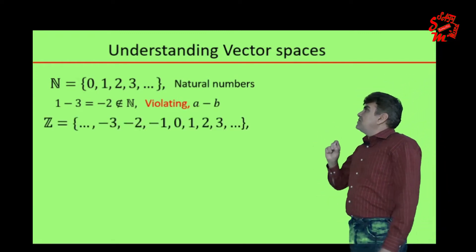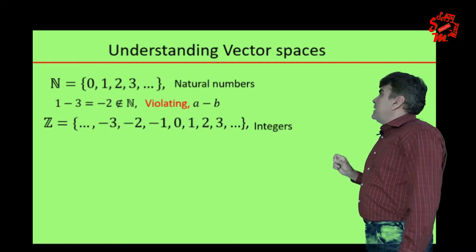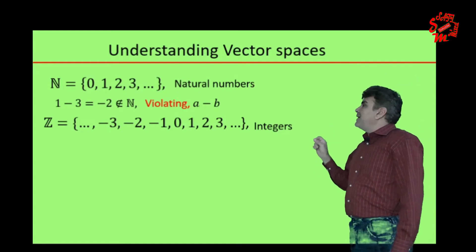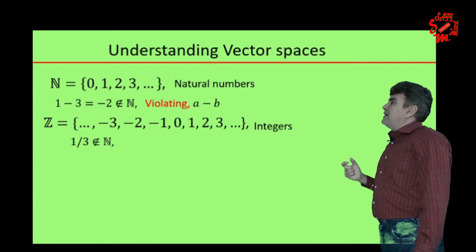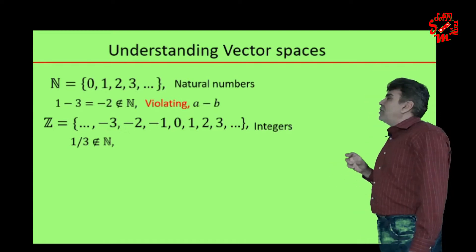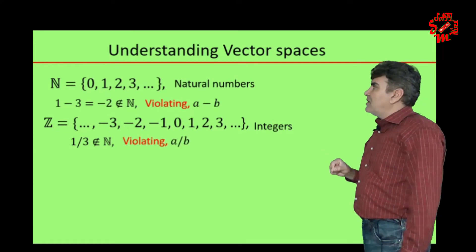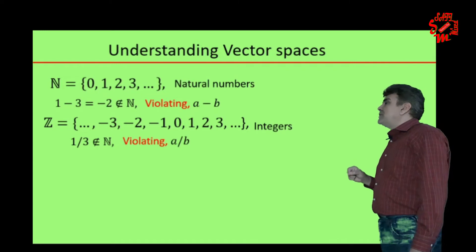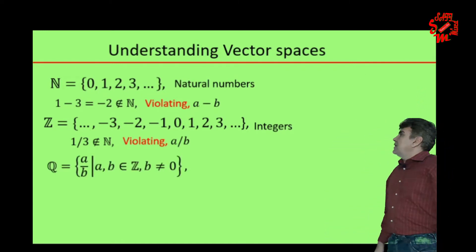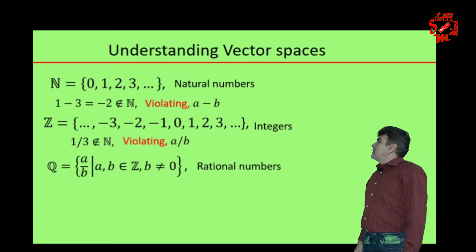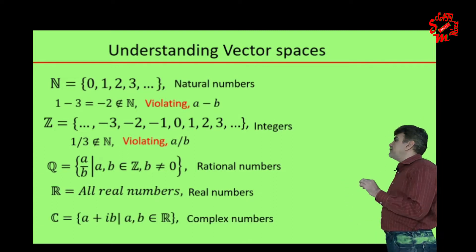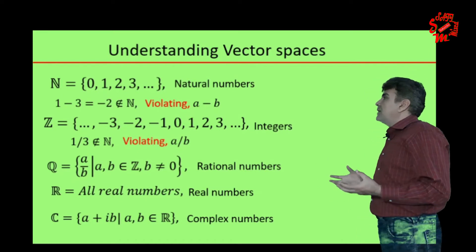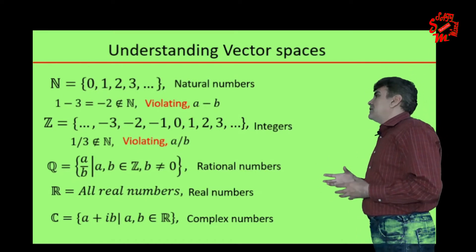Similarly, if I consider the set of all integers Z, again I can see that both one and three are elements of the set, but one divided by three doesn't belong to Z, which means the set of integers also violates the fourth element of the closure property for a set to be a field F. On the other hand, if I consider the set of rational numbers, set of real numbers, and the set of all complex numbers, one can easily check that all four elements of the closure property hold. Therefore, these three sets can work as fields.